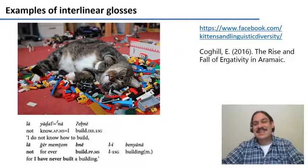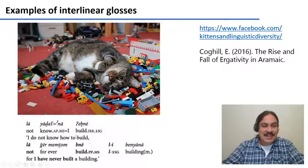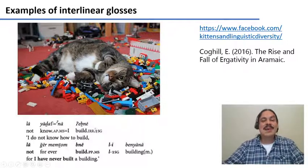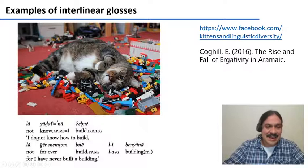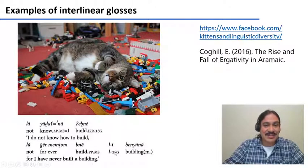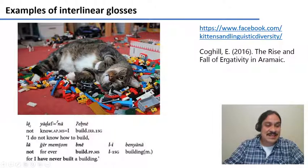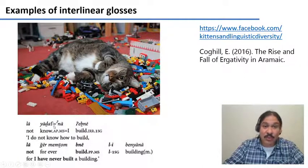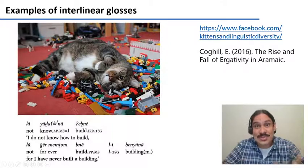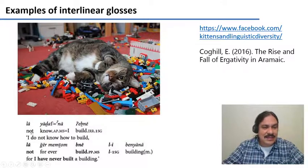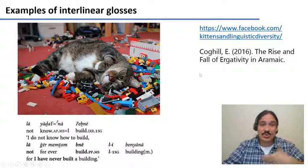This is from a Facebook account called Kittens and Linguistic Diversity. It's really good because it gets examples from grammars from languages around the world and combines them with an appropriate cat picture. For example: 'I do not know how to build, for I have never built a building,' which is a sentence from a grammar of Aramaic. The first line is the words in Aramaic transcribed into English letters in a form that researchers of Aramaic would understand. The second line has the meaning of each of the morphemes, and the third line has the translation into English or whichever language we have in common.